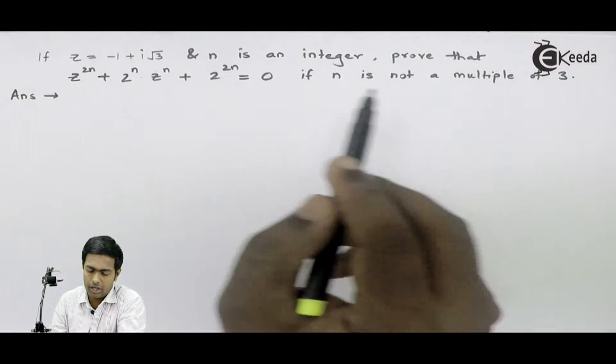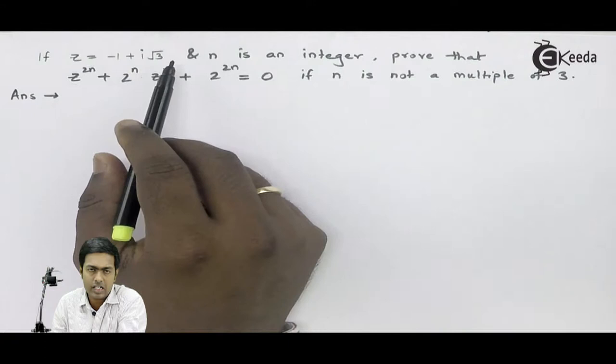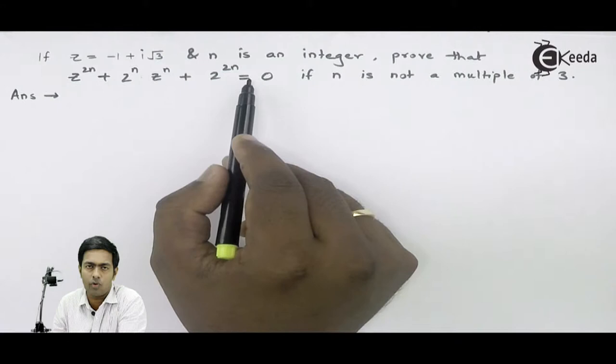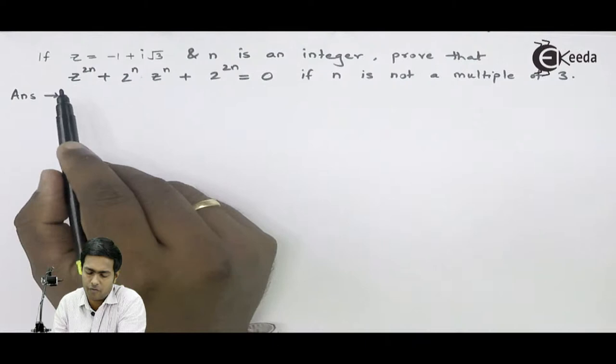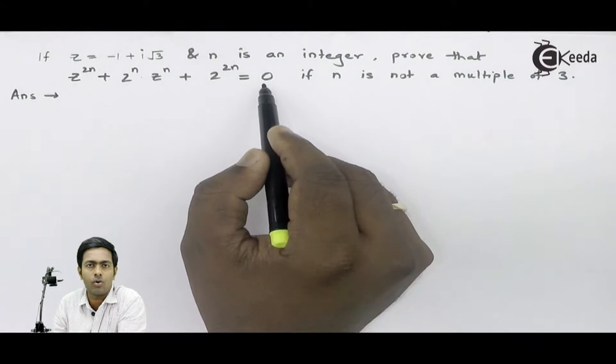Here the given complex number is in Cartesian form and we have been asked to prove that the addition of these three terms is equal to 0. What we'll do is first find the value of each term, then substitute each term's value on the left hand side and check whether we are getting 0 or not.